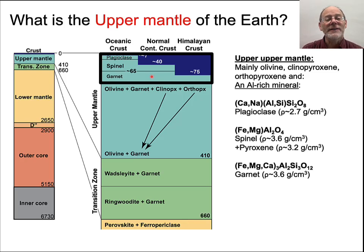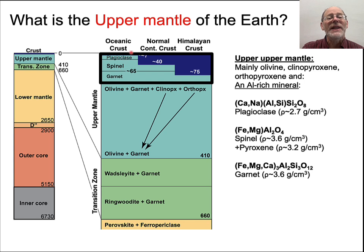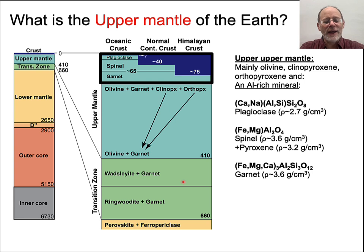The mantle mineralogy song, starting with the upper mantle, moving through the transition zone into the lower mantle. Garnet is deepest, spinel in the middle, plagioclase is shallowest but there's very little. Mineralogically, the mantle is stratified. If you recall this on the test, you'll be gratified.